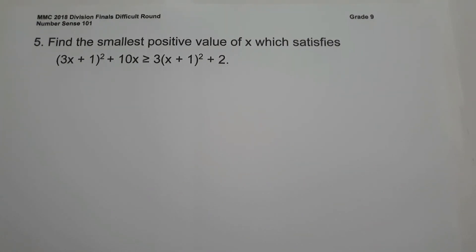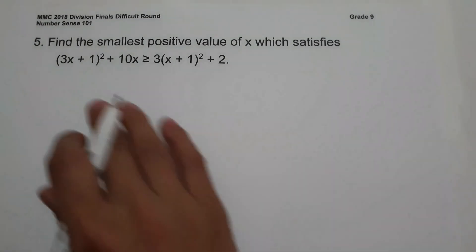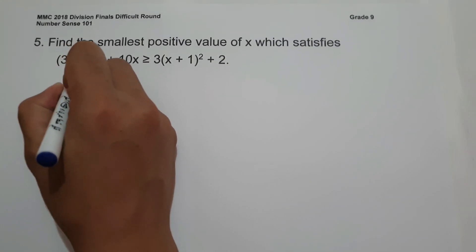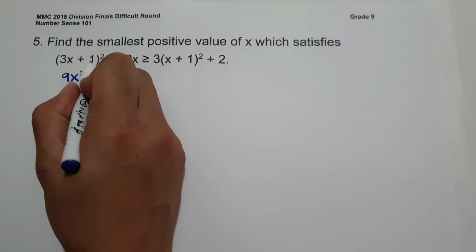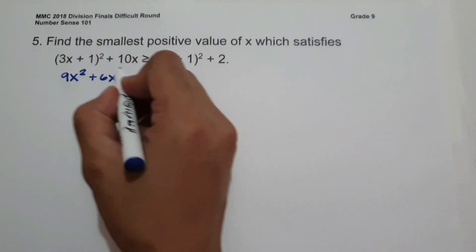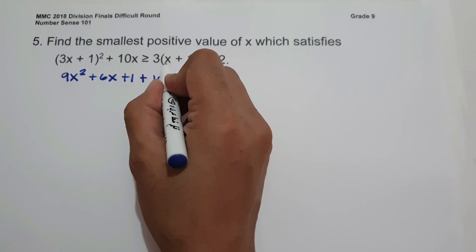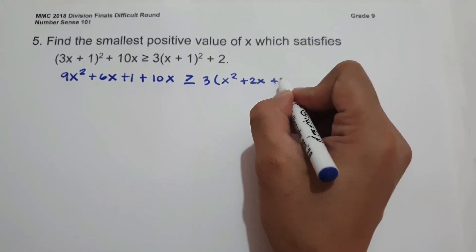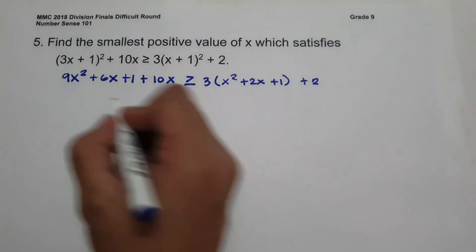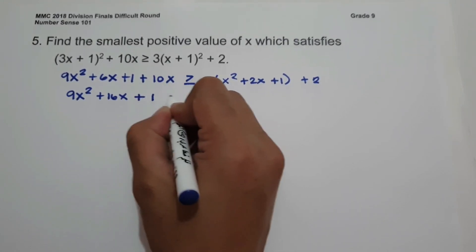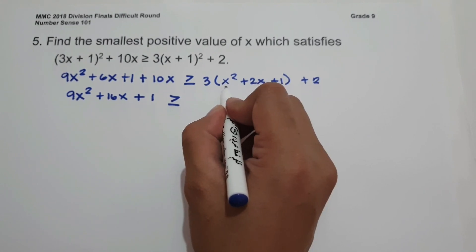On number 5: find the smallest positive value of X which satisfies (3X + 1)² + 10X ≥ 3(X + 1)² + 2. Expanding the left side: 9X² + 6X + 1 + 10X = 9X² + 16X + 1. On the right, distributing 3: 3X² + 6X + 3 + 2 = 3X² + 6X + 5.